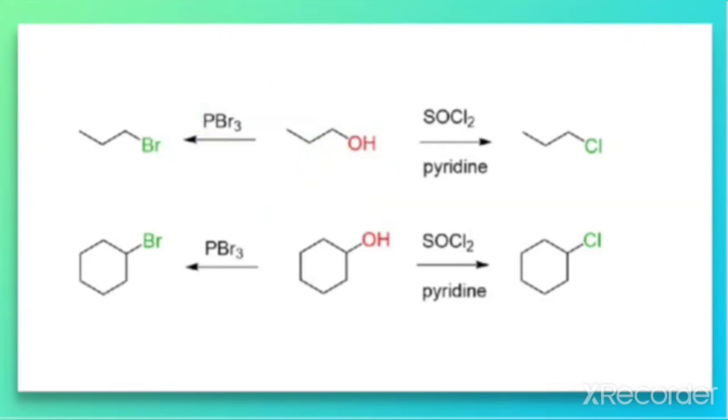Depending upon the phosphorus halide you will be finding out, you will be writing the particular product on the basis of the halogen group which is present in that.